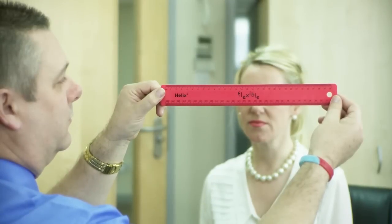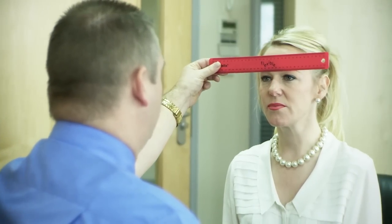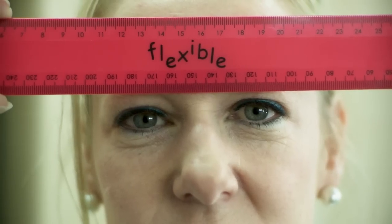If you don't have a PD ruler, you can use a standard ruler with millimeter measurements. Taking the same position with your helper as before, the person taking the measurement should rest the ruler firmly against your forehead to keep it steady.